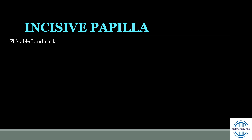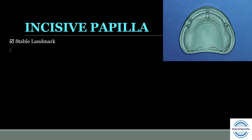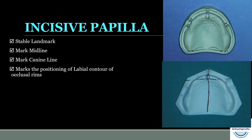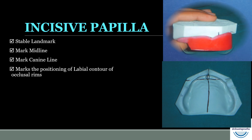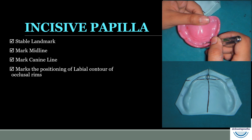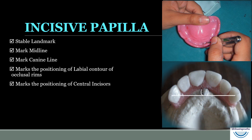First is the incisive papilla. It is a very valuable guide because it is a stable landmark and has a constant relationship to the natural central incisors. It helps in marking the midline on the edentulous cast. It also helps in marking the canine line on the edentulous cast, and marks the position of the labial contour of the occlusal rims, which is approximately 8 to 10 millimeters in front of the middle of the incisive papilla. It also acts as a reference for positioning the central incisors, again 8 to 10 millimeters in front of the middle of the incisive papilla.